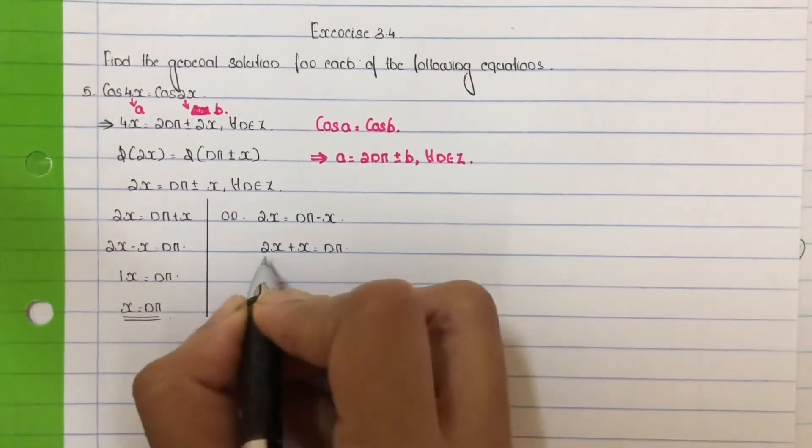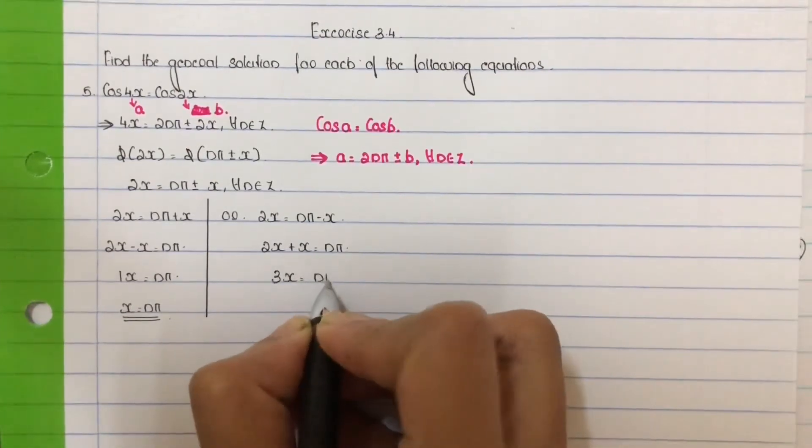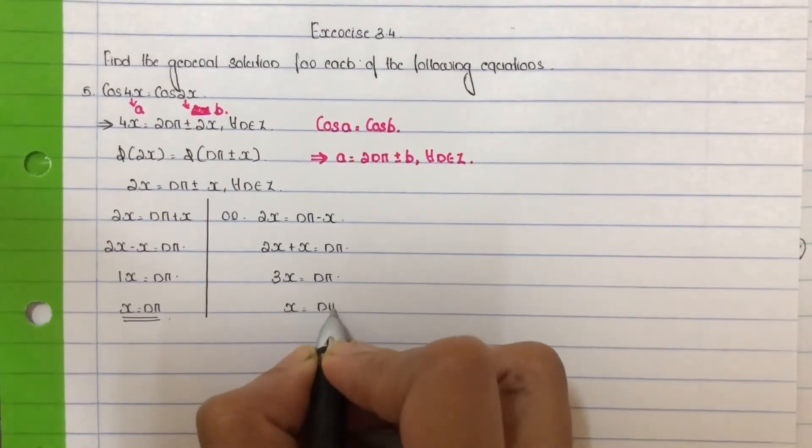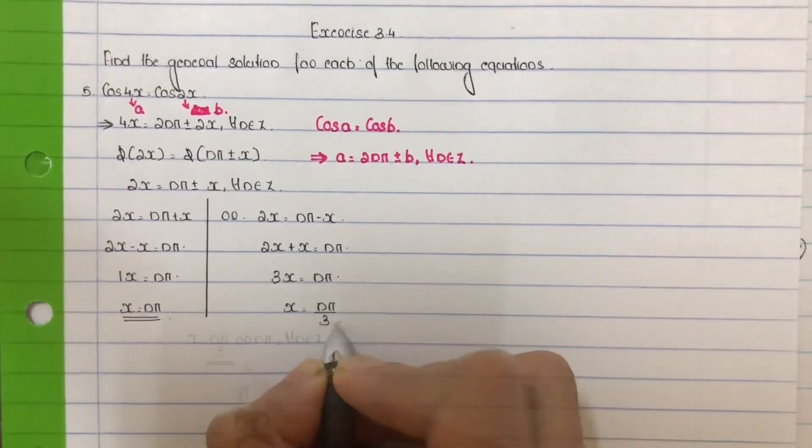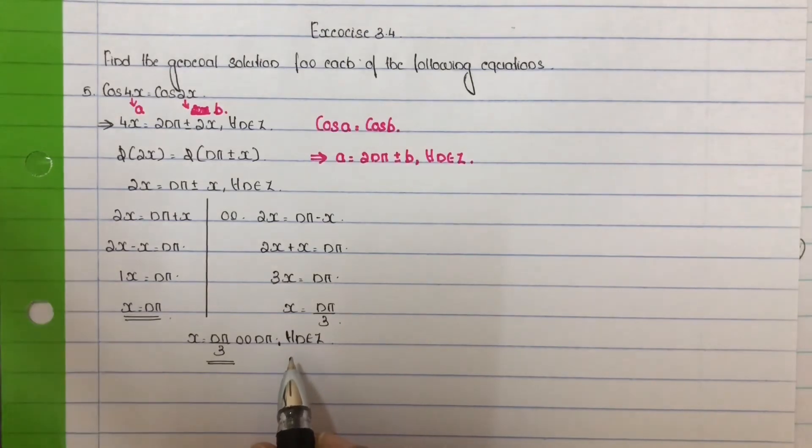For the second case, 2x minus minus x becomes 2x plus x. That is 2 plus 1, which is 3. So 3x equal to nπ, giving x equal to nπ by 3. Therefore the solution is x equal to nπ by 3 or x equal to nπ for all n belongs to integers.